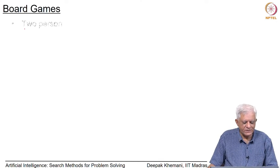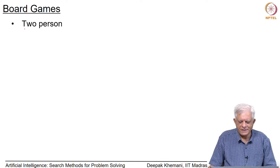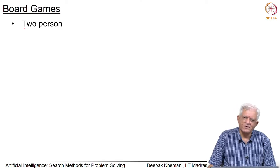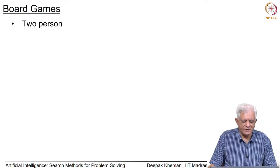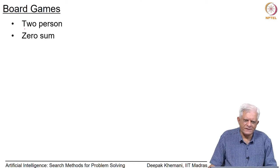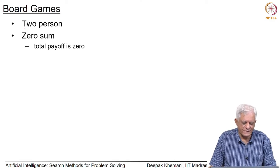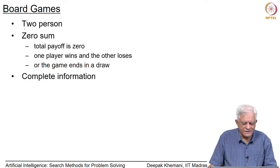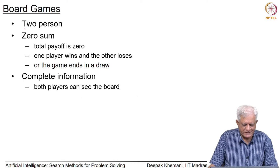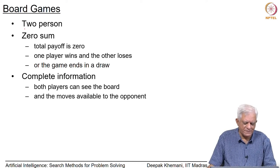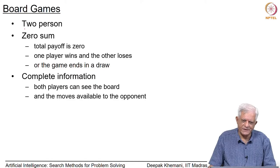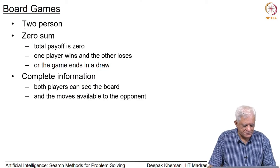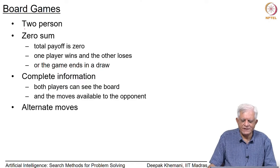Board games are essentially two-person games in the sense that they are played between two players. Chess, checkers, go, and the humble tic-tac-toe which children play — all these are examples of board games in which there are two people involved. These are zero-sum games where one side wins and the other side loses; the total payoff is zero. These are complete information games where both players can see the board position completely and can see the moves available to the opponent as well.